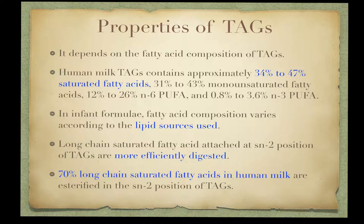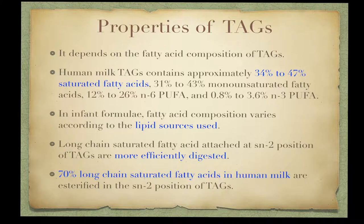The triglyceride structure is also important for the absorption of lipids in the infant intestine. Long chain fatty acids attached at the second carbon — carbon 2 — of glycerol in triacylglycerol are more efficiently digested and absorbed. Human milk is rich in palmitic acid, of which approximately 70 percent is esterified at carbon 2 of triacylglycerol, making it more efficiently digested and absorbed, compared to less than 20 percent at the C2 position in infant formula triglycerides.